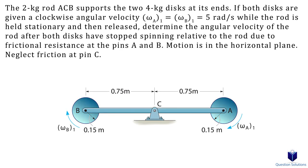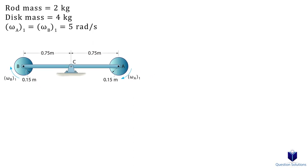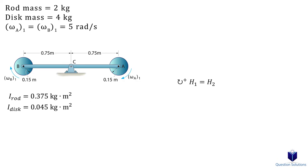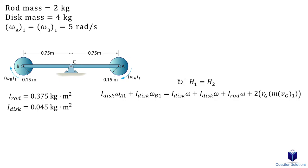Let's take a look at this question where we have a rod, and at the end of each rod is a disk. Each of the disks is given a clockwise angular velocity, and we have to figure out the angular velocity of the rod after both disks stop spinning relative to the rod. First, let's find the mass moment of inertia for the disk — the mass is 4 kg and the radius is 0.15 m. Now we calculate the mass moment of inertia for the rod — the mass is 2 kg and the length is 1.5 m. We can then write our conservation of angular momentum equation, assuming clockwise to be positive. The initial angular momentum consists of each disk's contribution, and the final side includes the angular momentum of the disks — since they've stopped spinning, this angular velocity applies to the whole system.